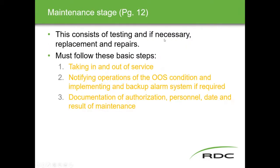The maintenance stage consists of testing and, if necessary, replacement and repairs. Basic steps include: taking the device in and out of service, notifying operations of the out-of-service condition, implementing a backup alarm system if required, and documenting the authorization — the permit pulled from operations, which contains who did the work, when, what was done, and the success level. This is where control technicians mostly come in.